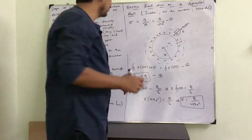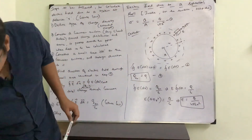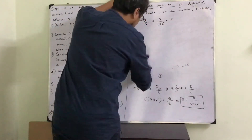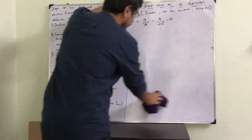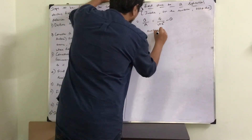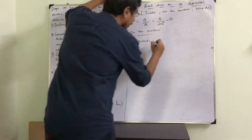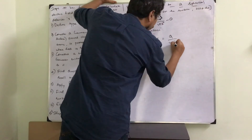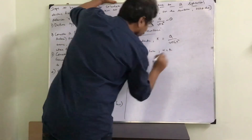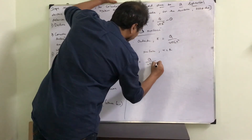Now we calculate the electric field for a point on the surface. Since the outside formula gives E equals Q divided by 4π·epsilon naught·(small r)², for a point on the surface we simply set small r equal to capital R. Substituting, E equals Q divided by 4π·epsilon naught·R².